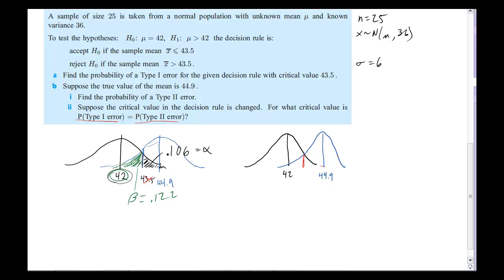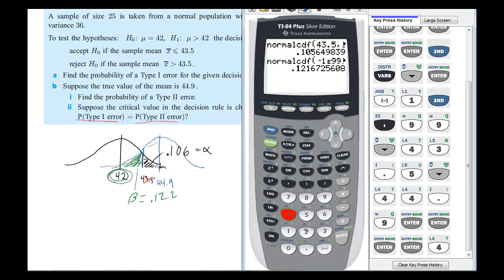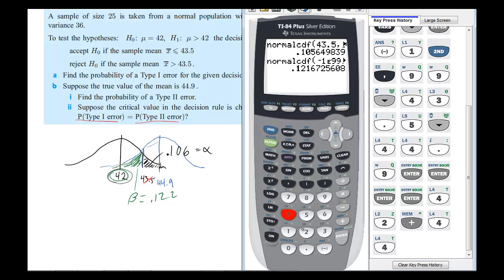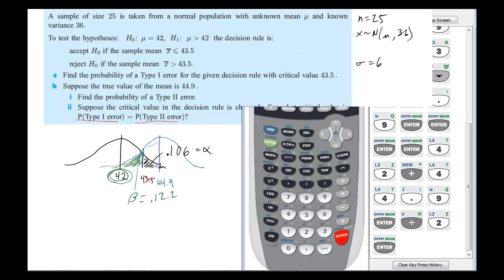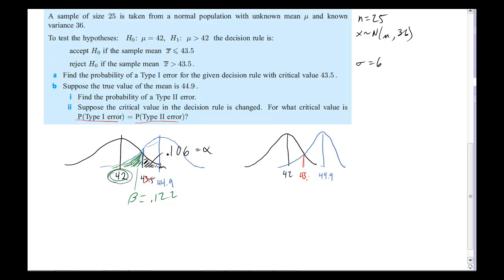Alright, so what we're going to do is take 42 plus 44.9 and then divide by 2, and I get my answer, 43.45. The question is actually just asking for the critical value. Well, it's 43.45. Now you could actually find the probability if you wanted. You'd be able to get this probability right here and also this probability on the other side, and you could show that the two are equal. In fact, I worked it out earlier and I got a probability of 0.113 for both sides. Why don't you give it a try? But anyway, that's the basic idea, and that's the end of this video. Thank you.